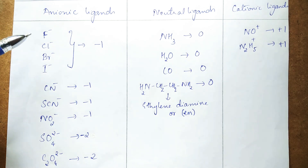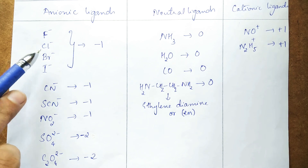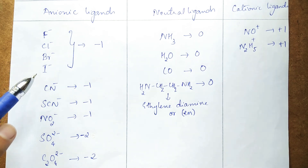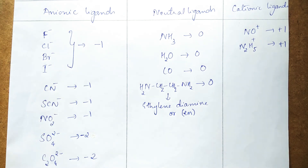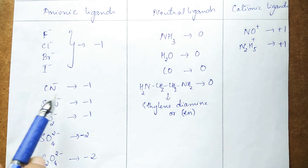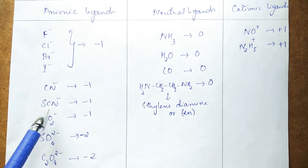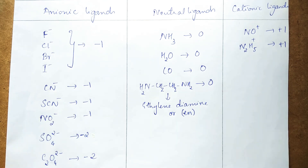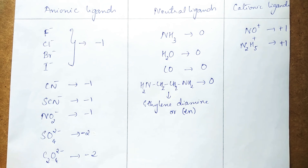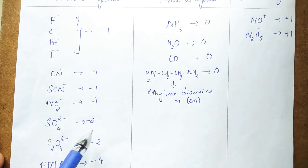In the first column we have anionic ligands. Halides — anions of halogens, the 17th group elements: fluoride, chloride, bromide, and iodide — all have a charge of minus one. Then we have cyanide with a charge of minus one, thiocyanate minus one, and NO₂⁻ (nitrito ligand) also with a charge of minus one.